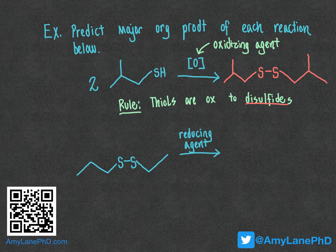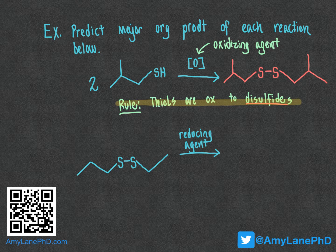In general, as we work through these types of problems, what you need to keep central in your mind is that thiols are always going to be oxidized to disulfides. So if you see a thiol reactant being treated with an oxidizing agent, what you need to think about more specifically is what disulfide it is going to result in — and that corresponds to the disulfide that would have the R group from the starting thiol molecule.